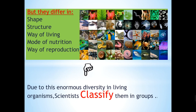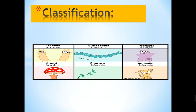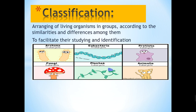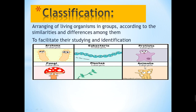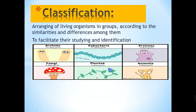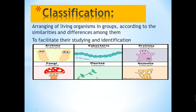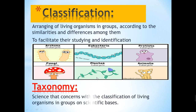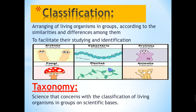Due to this enormous diversity in living organisms, scientists have to classify them in groups. Classification means the arrangement of living organisms in groups — for example, a group called Animalia, a kingdom called Plantae, a kingdom called Fungi, and so on. Scientists divide living organisms similar in most characters into groups to facilitate their study, make studying easier, and identify them more easily. The branch of science that deals with classification is called taxonomy — the science that concerns itself with classifying living organisms in groups on a scientific basis.